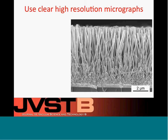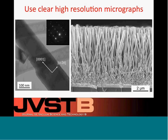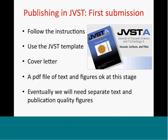When you have micrographs, use clear and high resolution images. Crop all unnecessary information from the bottom such as the institution and the company that made the microscope. Perhaps the most important part of a micrograph is the scale bar, which should be clearly visible. If you write text on micrographs, make sure to use light colored lettering on dark backgrounds and vice versa so that the writing is clearly visible.